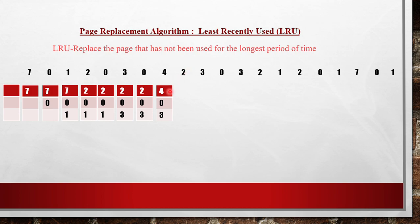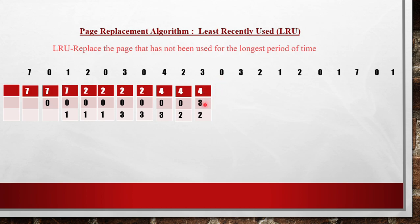Next, page 2 is required. Among 4, 0, and 3, the oldest used is 3. So 2 takes the place of 3. Then we need page 3. Among 4, 0, and 2, the oldest is 0. So 3 takes the place of 0. Next, we need page 0. Among 4, 3, and 2, the oldest is 4. So 0 takes the place of 4.